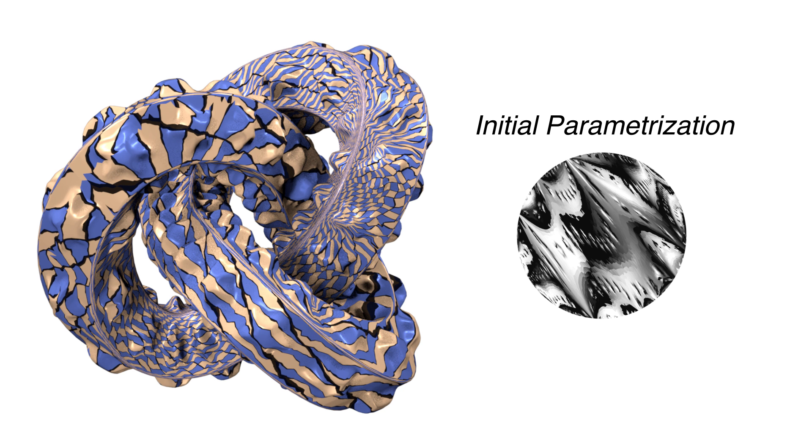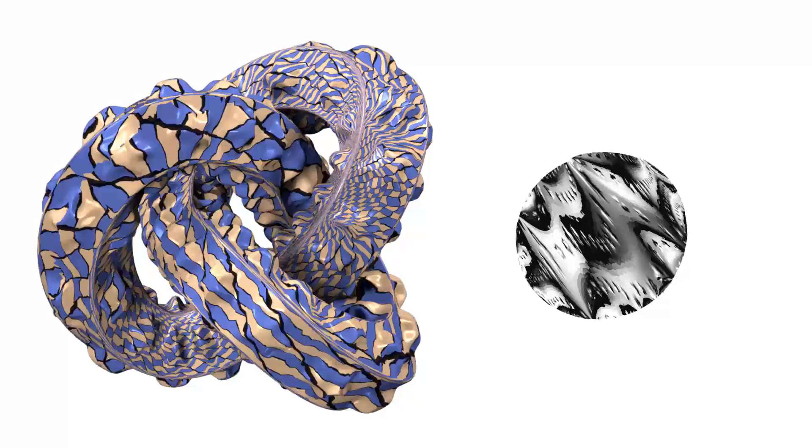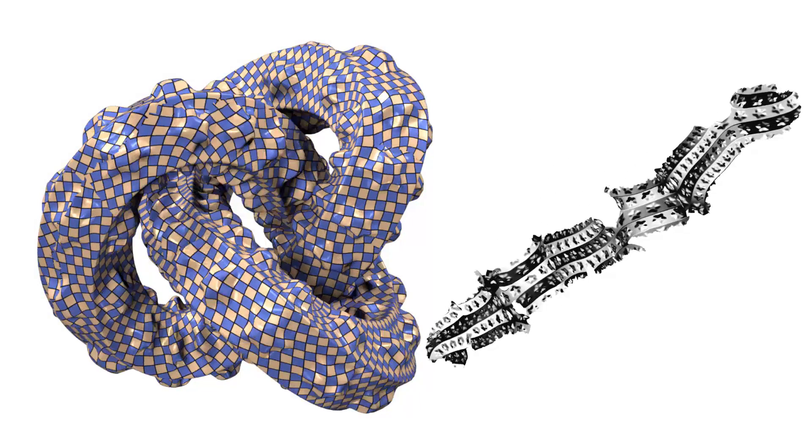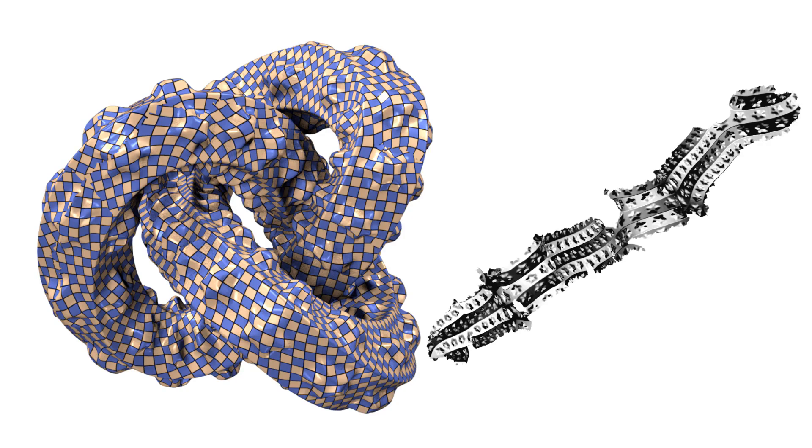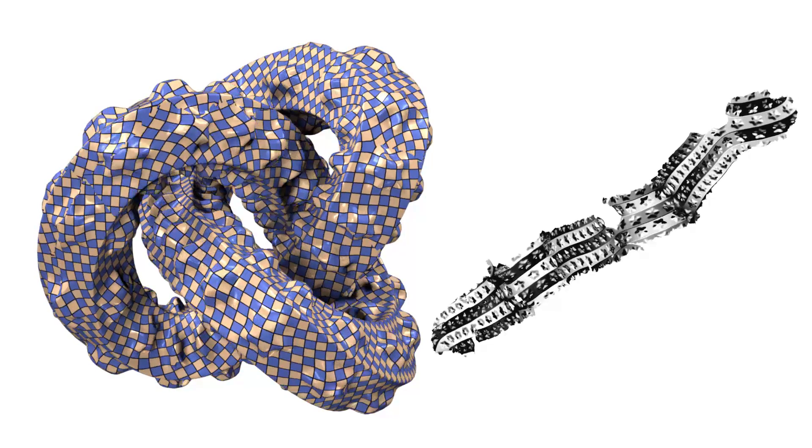Starting from a highly distorted Tutte parametrization, we first minimize an isometric energy and then add seamless constraints.